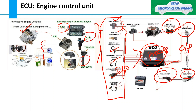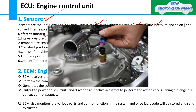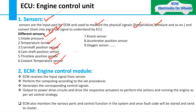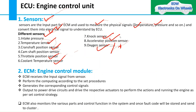First, let's discuss the sensors. A sensor takes the input and works as an input part for the ECM. What sensors do is measure physical signals like temperature and pressure, then convert them to electrical signals so the ECU can understand that language. There are different sensors: intake pressure sensor, temperature sensor, crank and camshaft position sensor, throttle position sensor, coolant temperature sensor, oxygen (lambda) sensor, and accelerator position sensor.